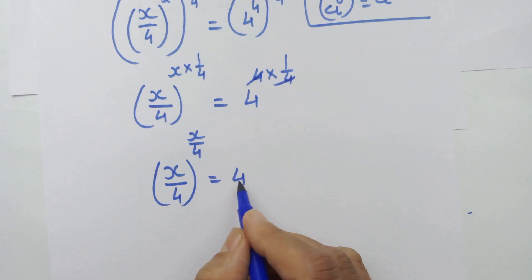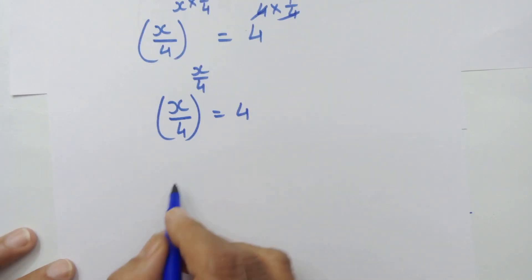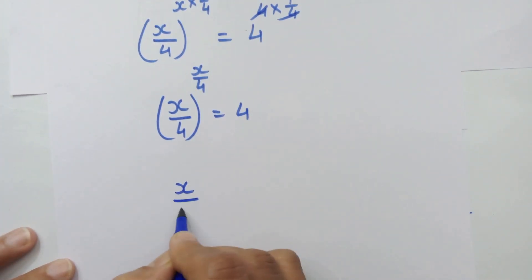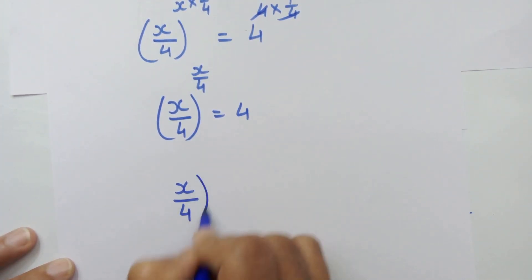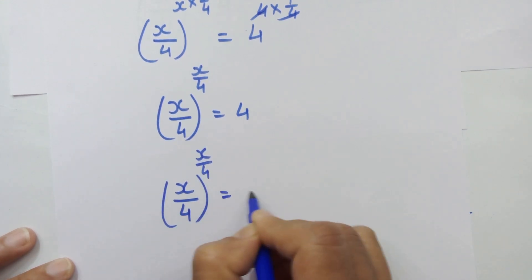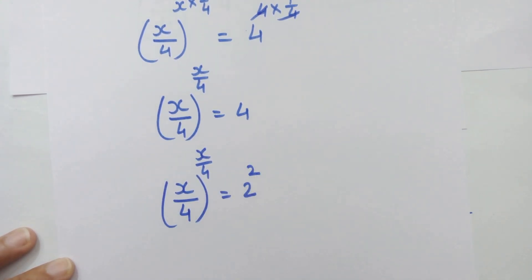Now 4 is 2 squared. So we have x upon 4 whole raised to x upon 4 is equal to 2 squared.